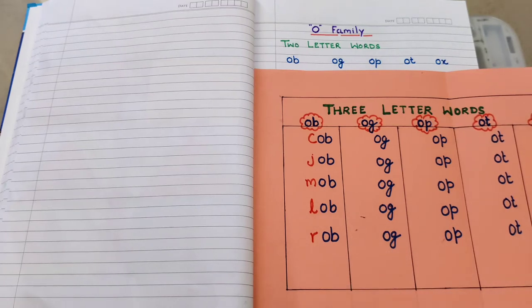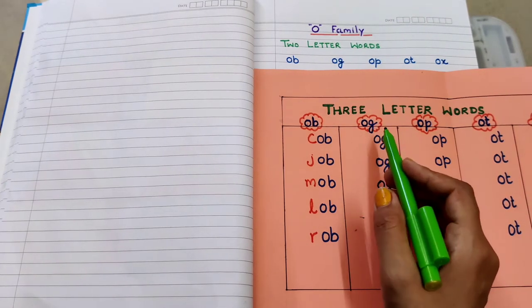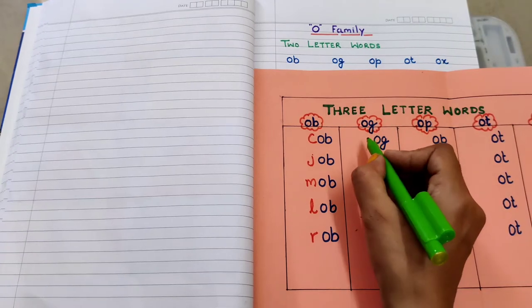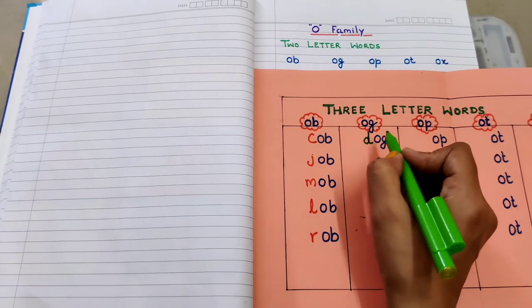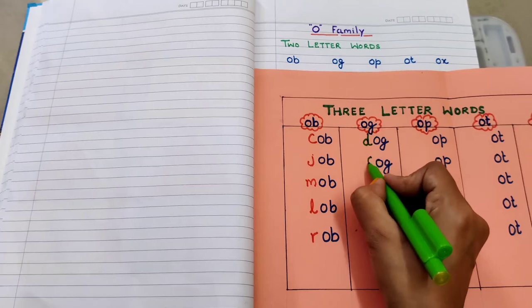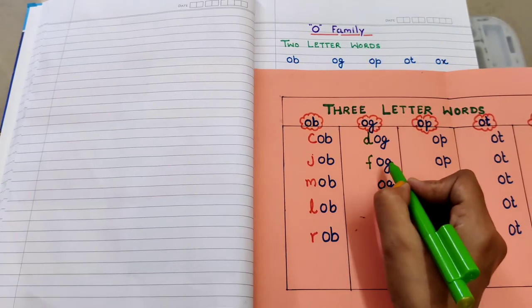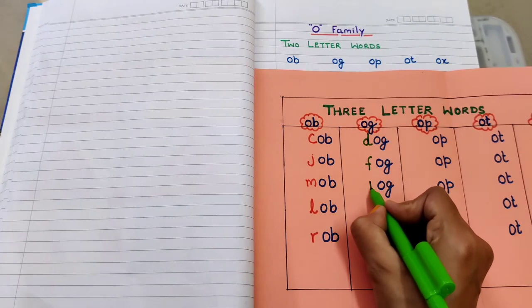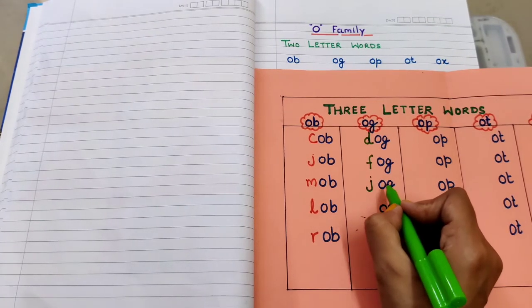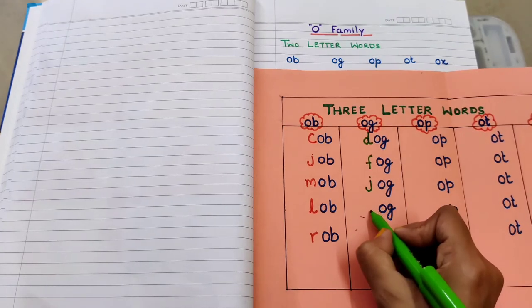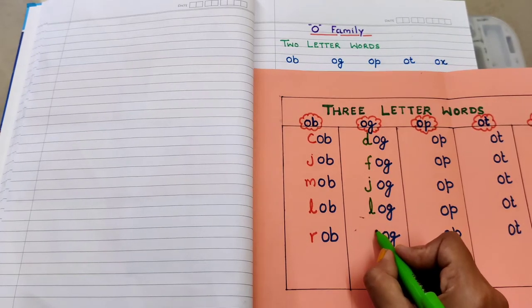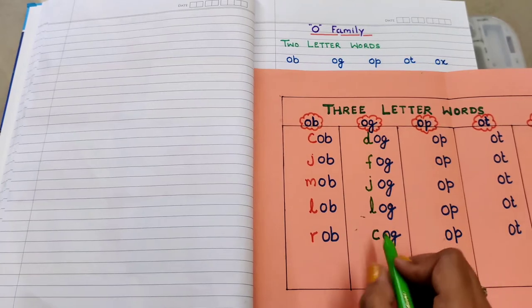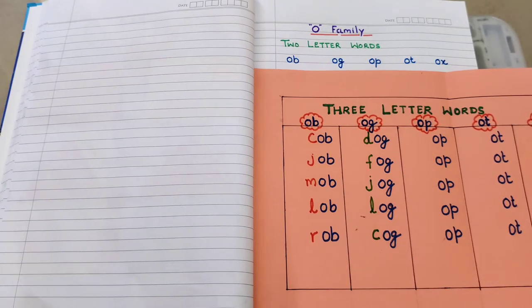This way we will add beginning letters to create three-letter words for the rest of the rhymes. Next is 'og'. In this rhyme we will add the first onset: D - 'd-og', dog. J - 'j-og', jog. Next letter I'm adding L as a beginning letter - 'l-og', log. And the last one I'm adding C - 'c-og', cog.